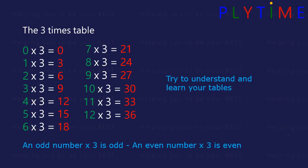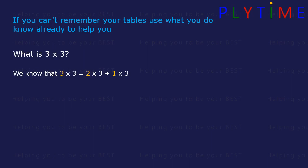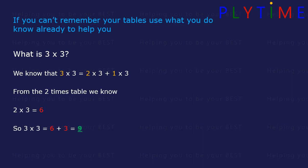Try to understand and learn your times tables. If you can't remember your tables, you can use what you already know to help you. What's three times three? We know that three times three is the same as two times three plus one times three. From the two times table, we know two times three is six. So three times three is six plus another three, which is nine.